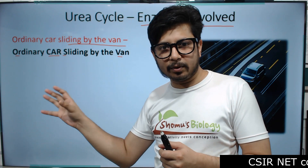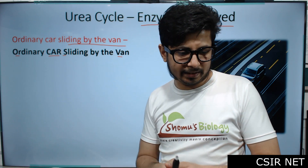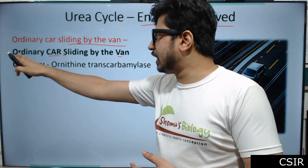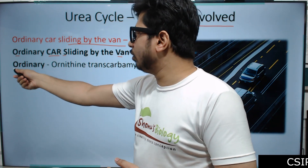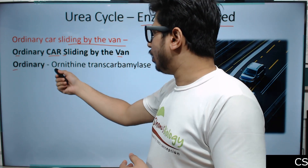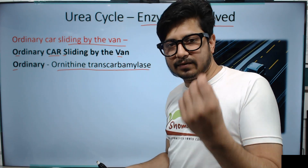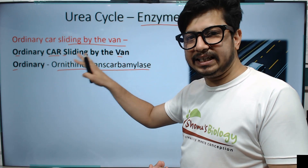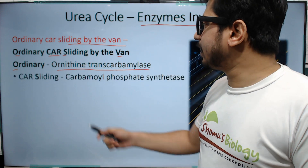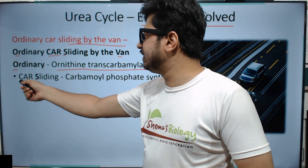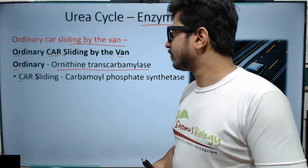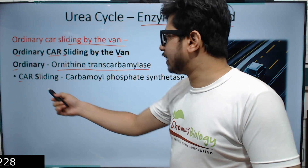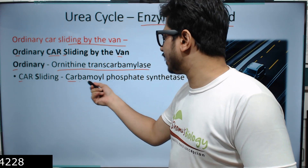Starting with 'O' — Ordinary — O is for Ornithine Transcarbamylase, the first enzyme. Then comes 'CAR' — C-A-R — where C stands for Carbamoyl Phosphate Synthetase.